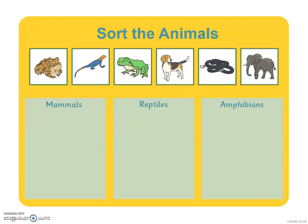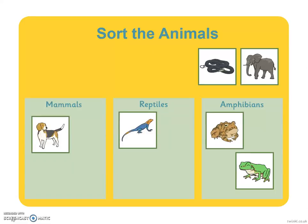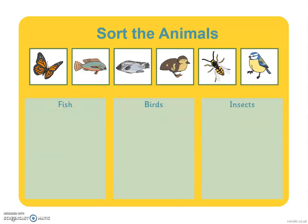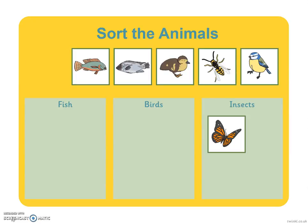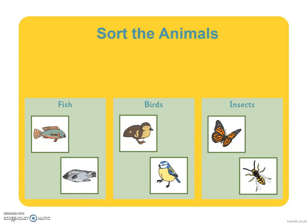Now let's take a look at some of the answers. Did you get those right? Let's have another go. There are six different animals. This time you need to sort them into fish, birds and insects. Pause the video while you sort them out. Let's take a look at the answers. Did you get them right?